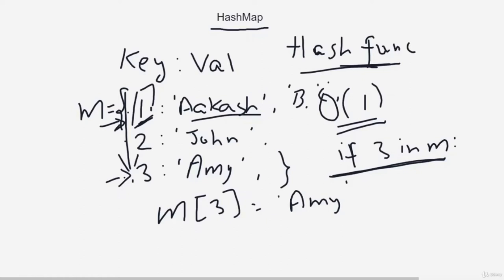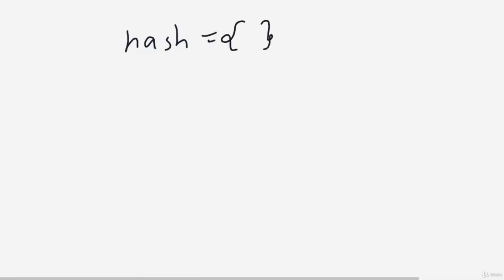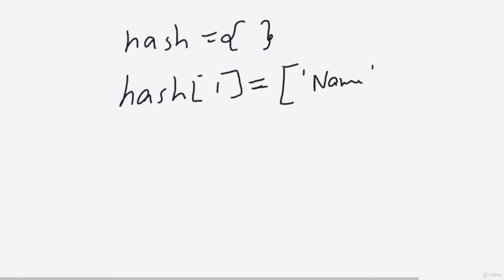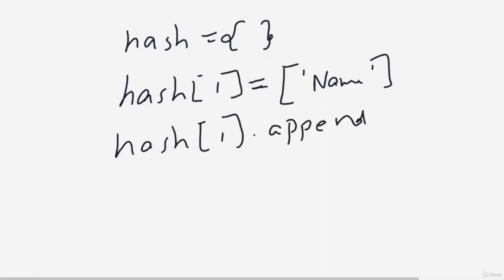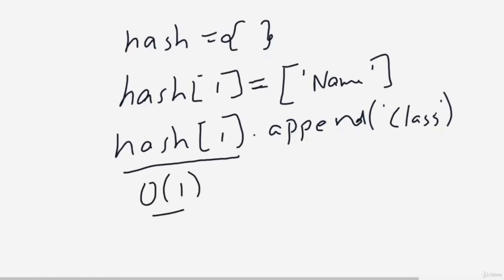In Python, you can use dictionaries as hash maps. Create an empty dictionary, add a key using hashmap[1] = ['name'], which makes the value a list. To append to it, use hashmap[1].append('class'). Remember: key-value pairs and O(1) lookup are the major things about hash maps. Once you get the idea, they become pretty easy. Thank you for watching — see you in the next one.